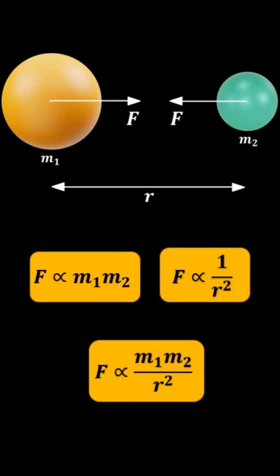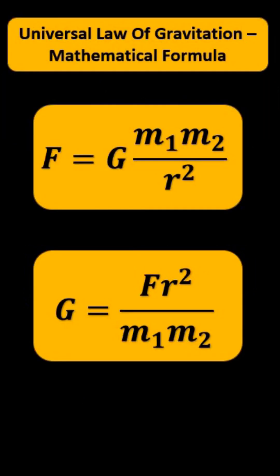There is a gravitational force of attraction between them, and that gravitational force is equal to F equals capital G m1 m2 divided by r square.